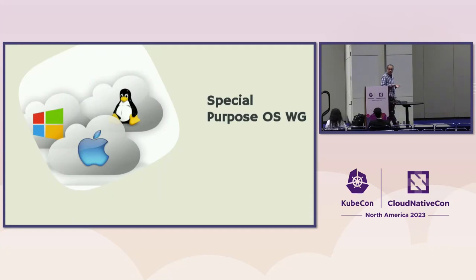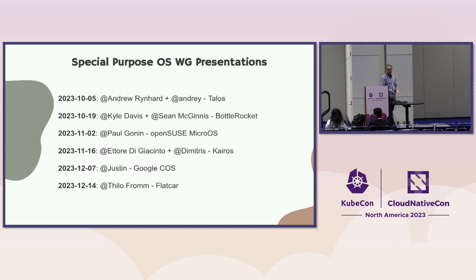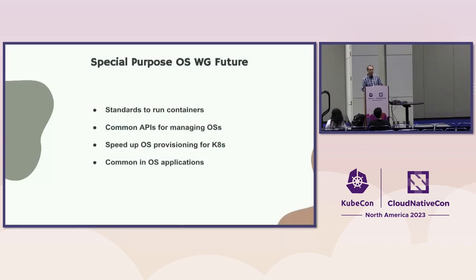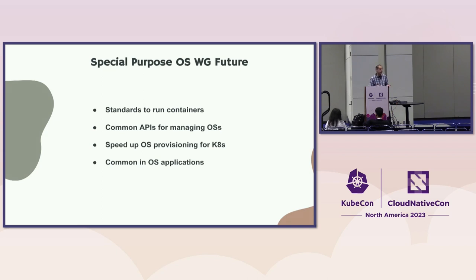Another working group we recently created is the Special Purpose Operating System Working Group. There's a lot of interest — we had presentations on October 5th with a full lineup of different operating systems, and there are many conversations about standardizing the APIs that talk to these operating systems. We'll probably see a lot more the rest of this year and next year. Some of the things we're thinking about include standards to run containers, common APIs to manage these operating systems, speeding up OS provisioning for Kubernetes, and standards to run WebAssembly modules on top of these operating systems.